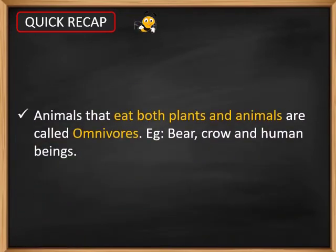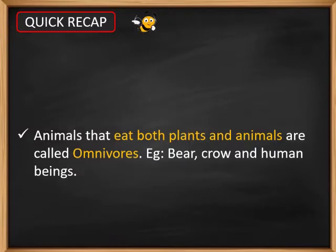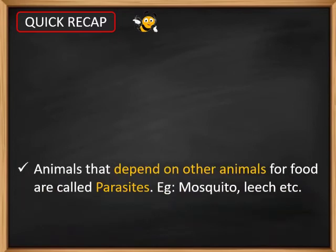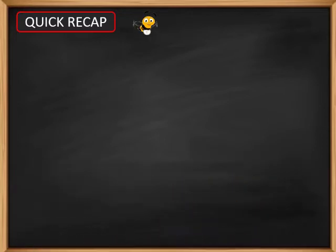Animals that eat both plants and animals are called omnivores. Examples are bear, crow and human beings. Animals that depend on other animals for their food are called parasites. Examples are mosquito, leech and brown worm.